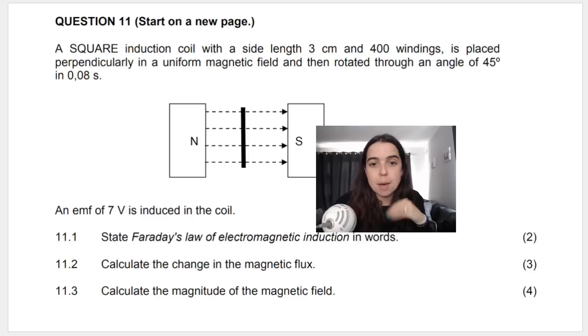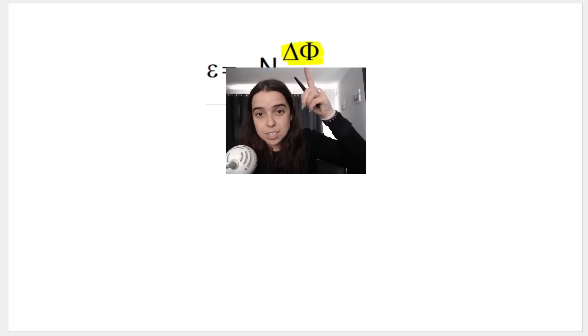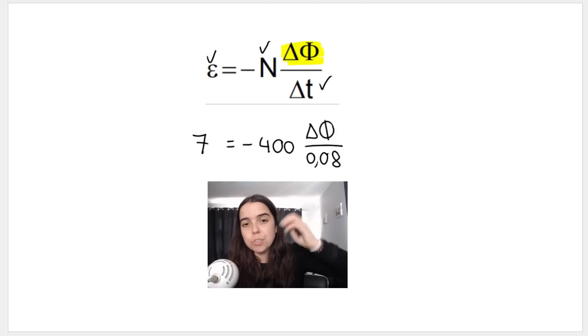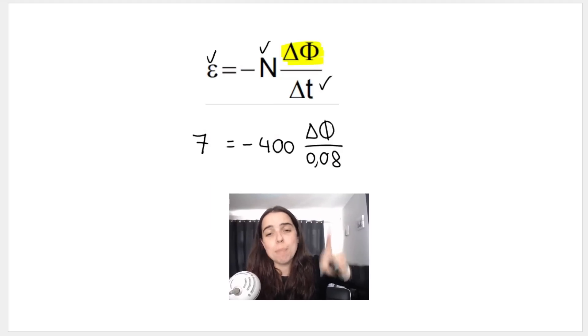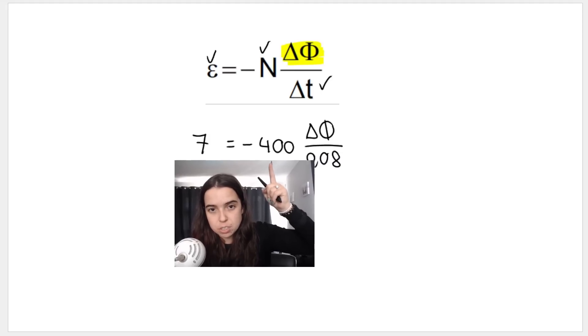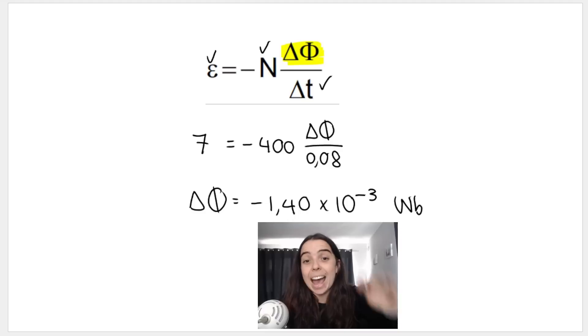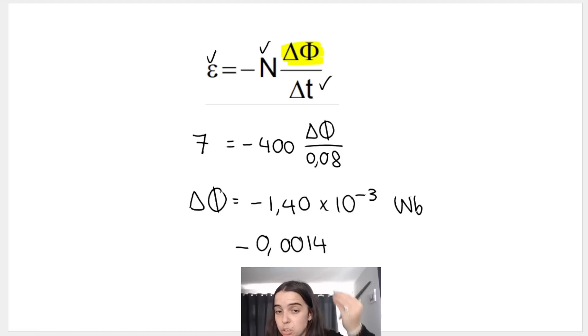Second question, calculate the change in magnetic flux. Remember magnetic flux can be represented by this symbol Φ. When they ask for the change, they're asking for ΔΦ. Here's your formula: ε = -N(ΔΦ/Δt). We know EMF, we know N, and we know time. You substitute in your values correctly. So you solve for change in magnetic flux by saying 7 divided by -400, then times 0.08 because of inverse operations, and that's the answer you get. Remember our change in magnetic flux is measured in Weber, Wb. This is the same answer in scientific notation.